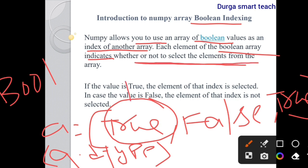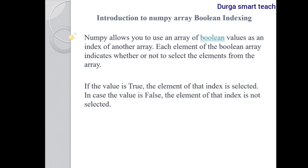If the value is true, then the element at that index is selected. If it is false, then that element is deselected or not selected. So boolean values are used to indicate whether or not to select elements from the array.